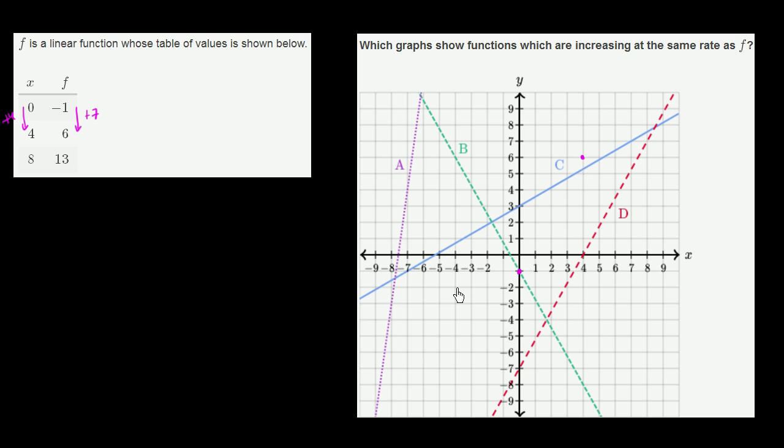And two points specify a line. We know that it is a linear function. You can even verify it here. When we increase by 4 again, we increase our function by 7 again.